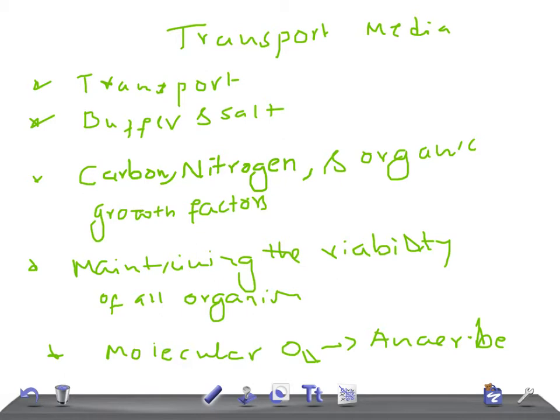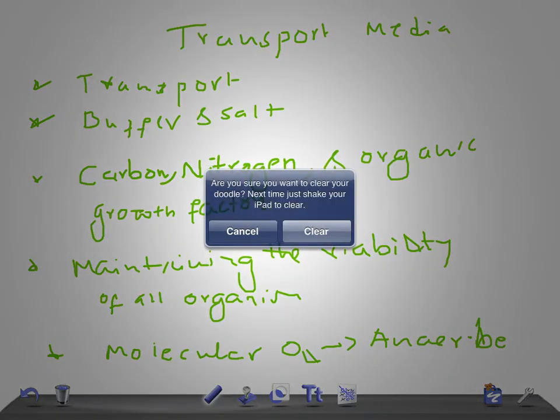To summarize, transport media is used for transporting bacteria from one laboratory to another or for cultivation. It should not contain carbon, nitrogen, or organic growth factors. It should contain only buffers and salts. If transporting anaerobes, there should be no molecular oxygen. It must maintain the viability of all organisms without altering their concentration.